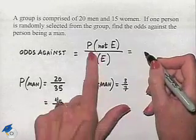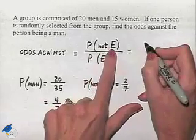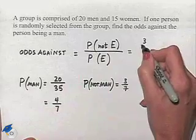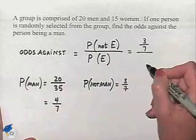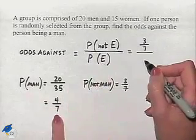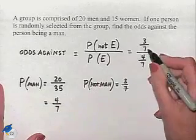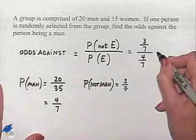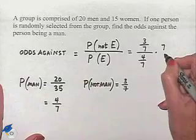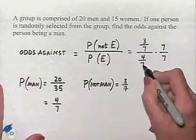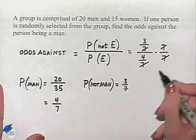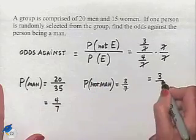And now let's set up our fraction. The probability of not being a man would be not having the event, and that would be 3/7, divided by the probability of the event occurring, which is the probability of coming up with a man, which would be 4/7. And so we notice that we can simplify this—we could multiply both numerator and denominator by 7—and come up with our answer of 3/4.